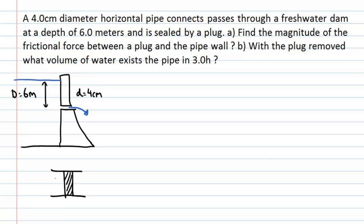Part A is a hydrostatic problem because the water is not flowing. Part B is a hydrodynamic problem. For part A, we need to find the frictional force associated with the plug by looking at all the forces acting on it, because one of them will be the frictional force.